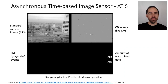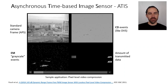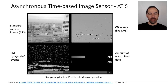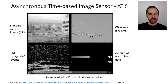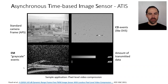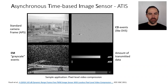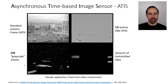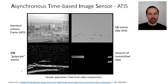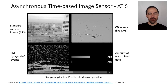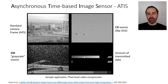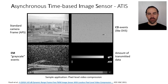Let's see an example with some videos. On the top left, you see the output of a standard camera visualizing a traffic scene. On the top right, you see the change detection events. On the bottom left, you see the exposure measurement or grayscale events. The events fill up the regions where there are moving things in the image plane, since the camera is static.